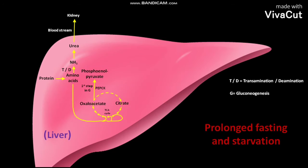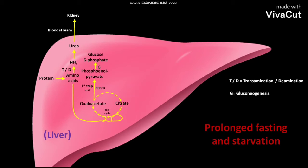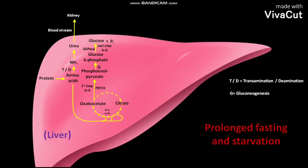The phosphoenolpyruvate goes through further steps of gluconeogenesis to produce glucose-6-phosphate. The glucose-6-phosphate, in the presence of G6Pase (glucose-6-phosphatase), is converted to glucose and inorganic phosphate. The glucose then goes to the brain via the bloodstream.